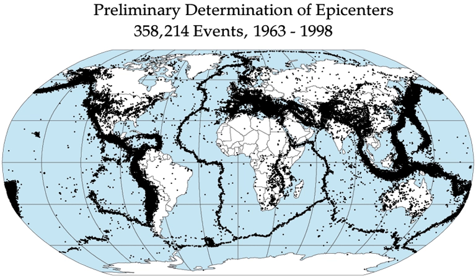In the United Kingdom, for example, it has been calculated that the average recurrences are an earthquake of 3.7 to 4.6 every year, an earthquake of 4.7 to 5.5 every 10 years, and an earthquake of 5.6 or larger every 100 years. This is an example of the Gutenberg-Richter law.